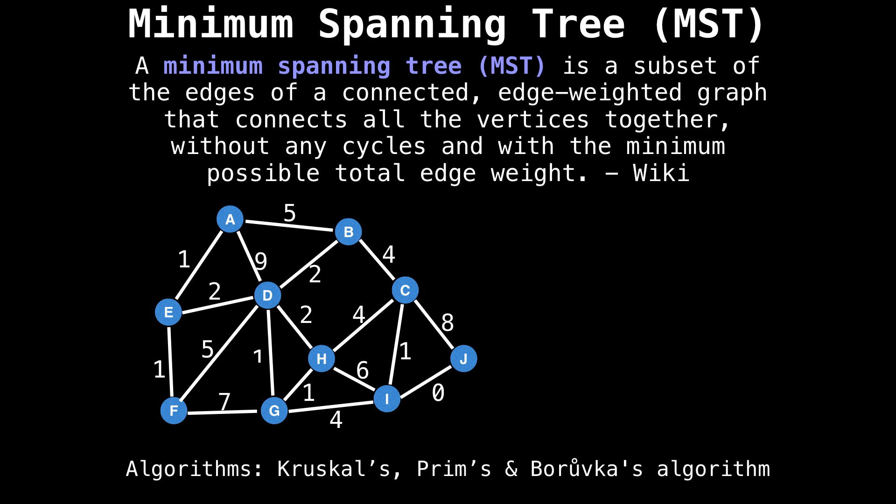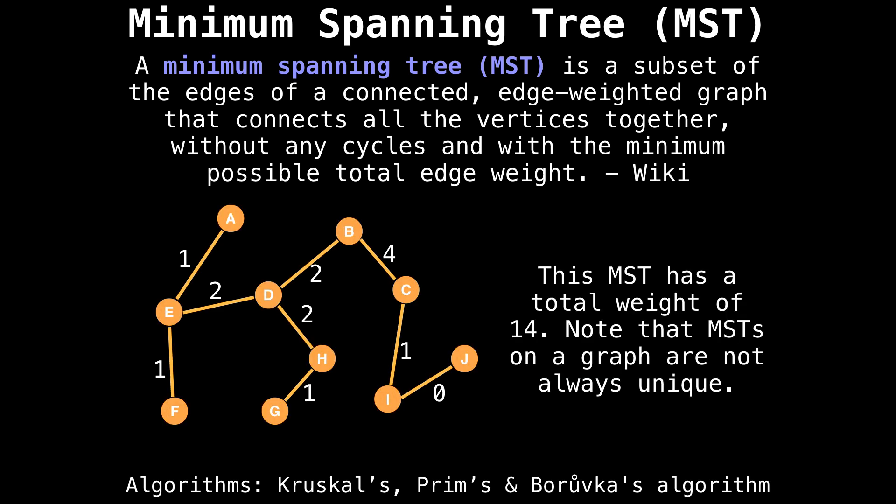For example, in the graph below, one of the possible minimum spanning trees is this graph with a least cost of 12.